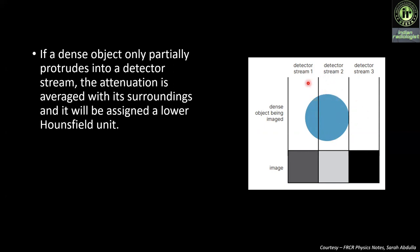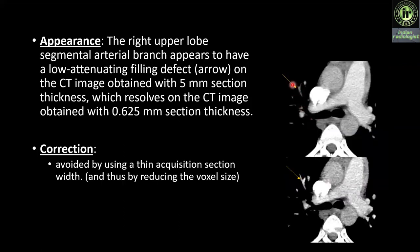Here we see a dense object lying in a less dense background with three detector channels: 1, 2, and 3. In detector channel 2, the object fills the channel resulting in high attenuation. In channel 3, none of the dense object is imaged and hence the attenuation is low. In channel 1, the object is only partially imaged, so the attenuation is an average between the dense object and the less dense background. Example: the right upper lobe segmental arterial branch appears to have a low attenuation filling defect on 5mm slice thickness CT, which resolves on 0.625mm slice thickness. Correction: use thin acquisition section thickness to reduce voxel size.